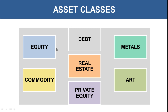Asset classes include equity, debt, metals, real estate, commodity, private equity, and art. Private equity is when you invest in a startup business — you have accumulated a huge amount of wealth and invest in a startup that could grow over time, giving you returns from their profitability. You may invest in commodities like wheat and sugar traded on multi-commodity exchanges, shares, bonds and debt mutual funds, metals like gold and silver, commercial and residential property or land, and also art — which is not very common in our country but some people invest in it.